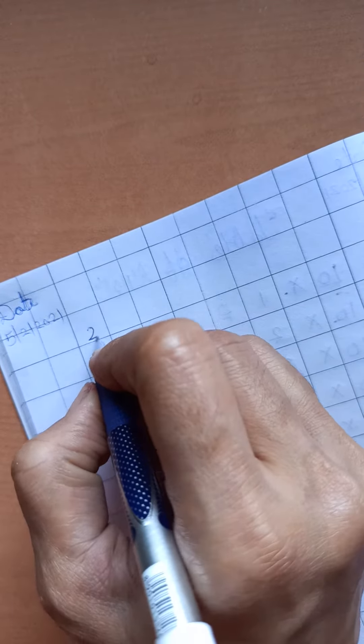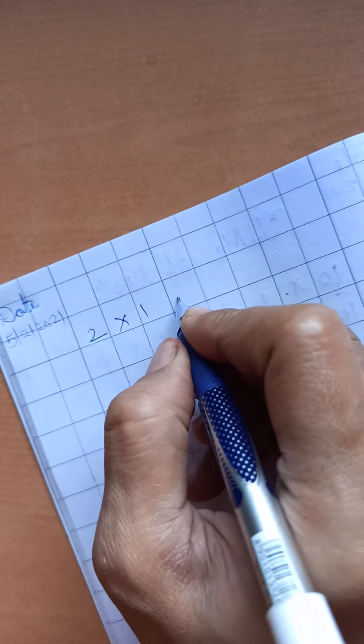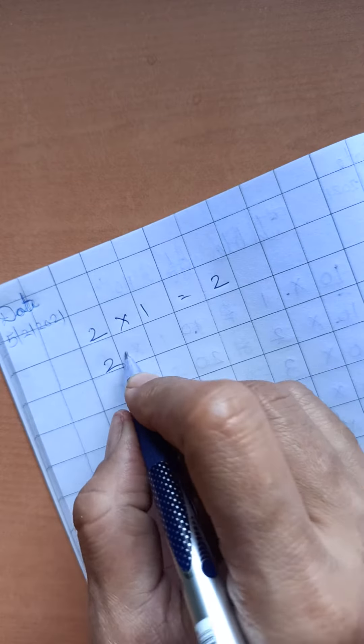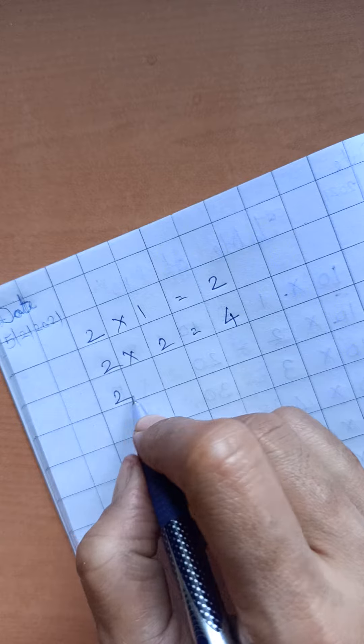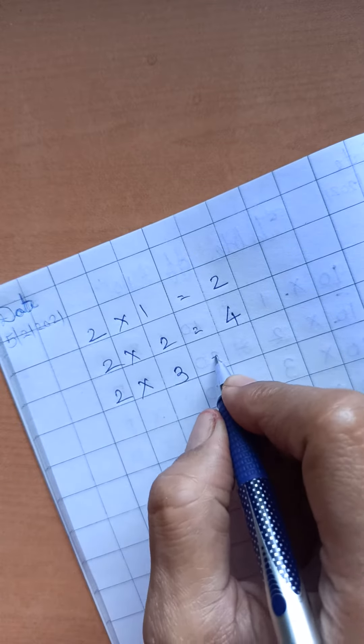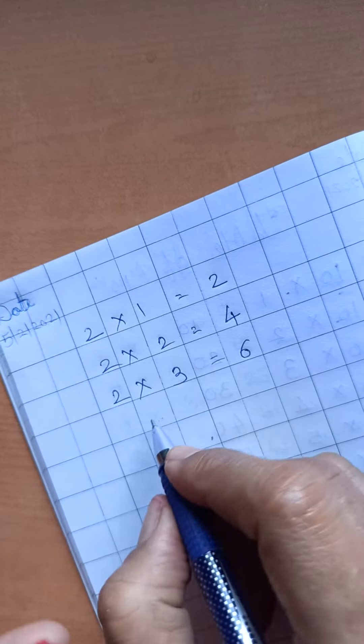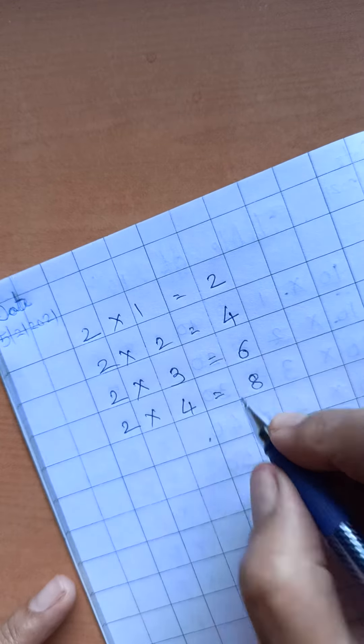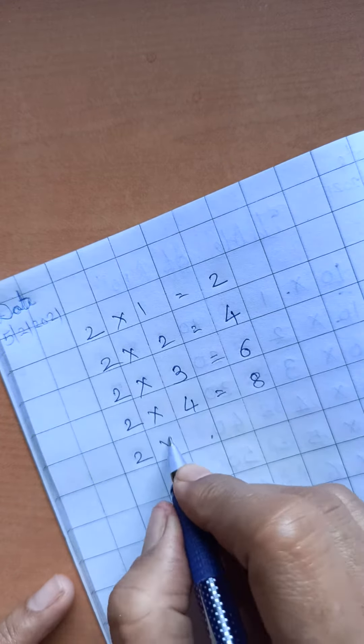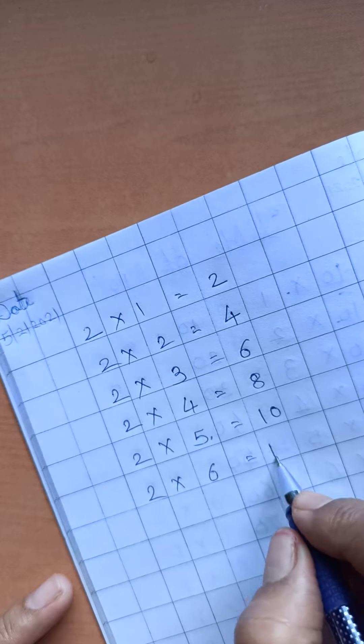Let us start from table 2. 2 1s are 2. 2 2s are 4. 2 3s are 6. 2 4s are 8. 2 5s are 10. 2 6s are 12.